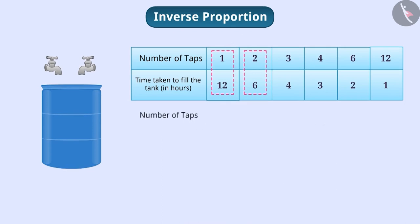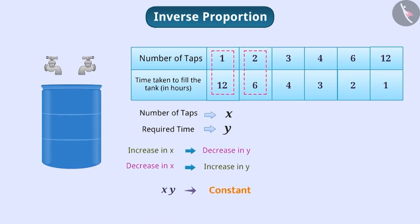If we denote the number of taps by x and the time required by y, then as x increases, y decreases and as x decreases, y increases. But xy is always a constant. In such a situation, we say that x varies inversely with y.